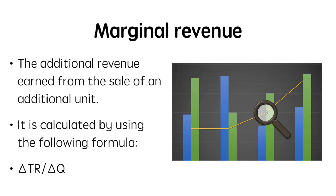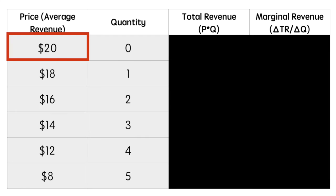Now we'll look at a table of some simple figures to demonstrate how we can calculate the different revenues. The first column here is for price, which is the same as average revenue. As the price falls, we see the quantity sold increases.